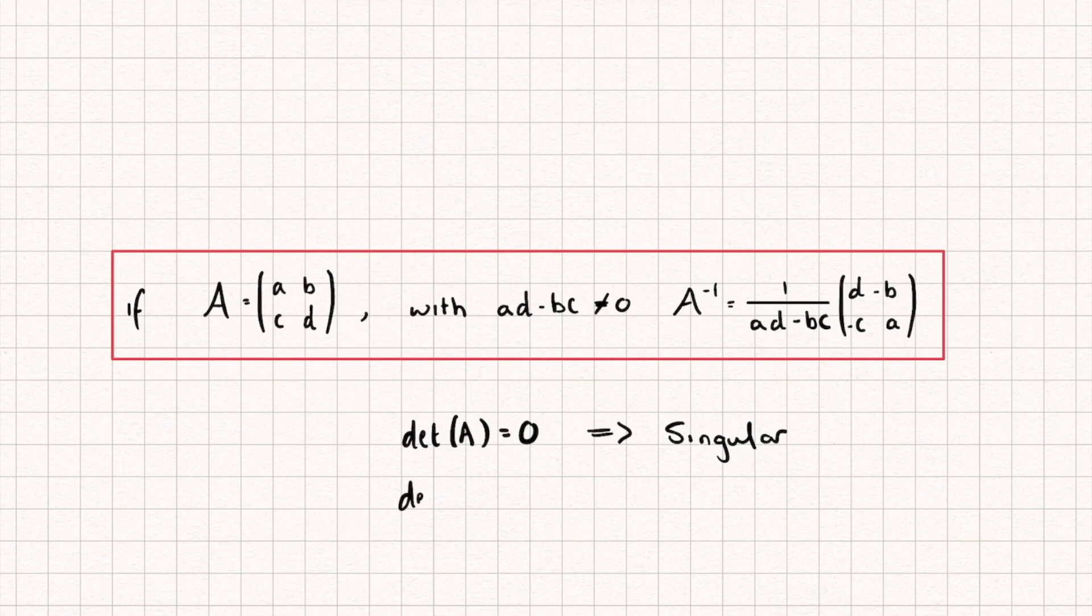Now, if, on the other hand, the determinant of our matrix A is not equal to 0, that's going to mean that it does have an inverse, and we call it a non-singular matrix.